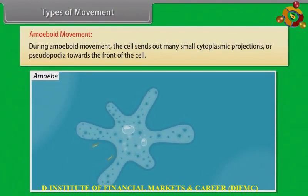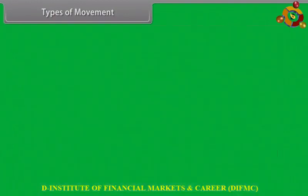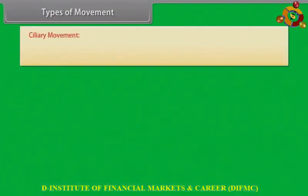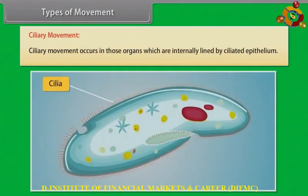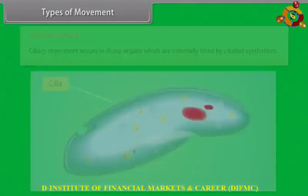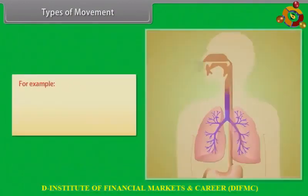Amoeboid movement. During amoeboid movement, the cell sends out many small cytoplasmic projections or pseudopodia towards the front of the cell. Ciliary movement occurs in those organs which are internally lined by ciliated epithelium.